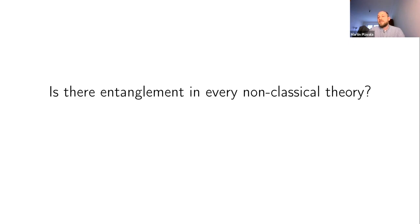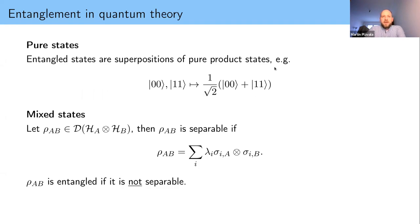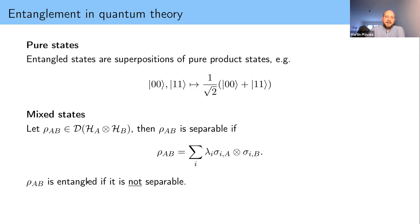This can be seen as a purely foundational question investigating the nature of entanglement. In quantum theory, a pure state is entangled if it cannot be written as a product state — for example, |00⟩ and |11⟩ are product states, while a Bell pair is not. For mixed states, a state is separable if it can be written as a convex combination of product states, and entangled if it is not separable. We want to generalize this to GPTs.